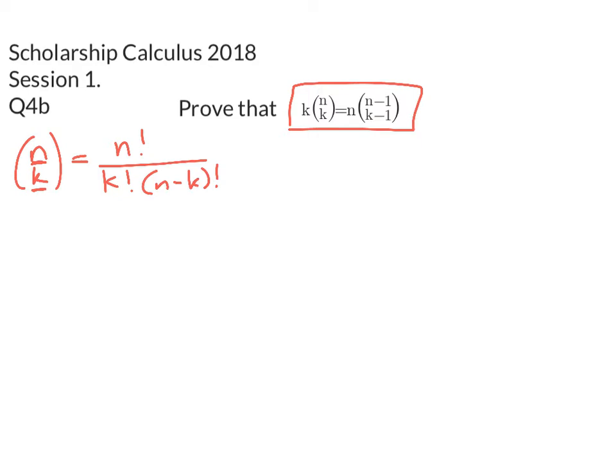Now you might find it useful, before you start the proof, to just figure out what is (n-1) choose (k-1). Well, (n-1) choose (k-1) is going to be (n-1) factorial divided by (k-1) factorial times, now I'm going to run out of space,